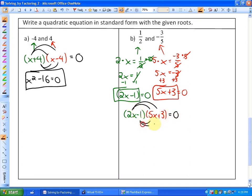And finally, in standard form, that could be represented as 10x squared plus 6x minus 5x minus 3 is equal to 0, which would be 10x squared plus x minus 3 is equal to 0. That would be an example of a quadratic equation in standard form that has the roots of a half and negative 3 fifths.